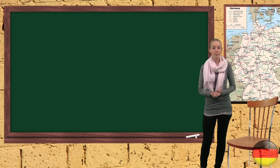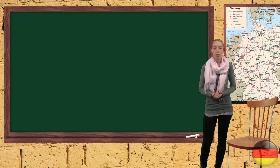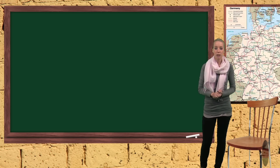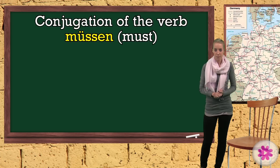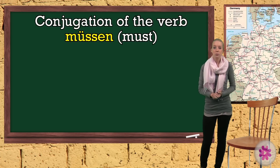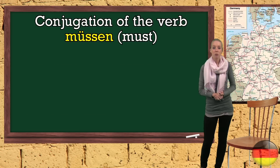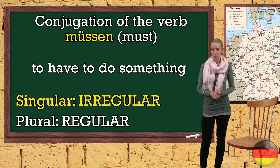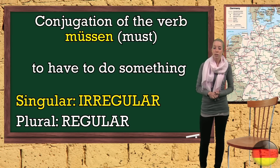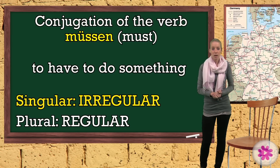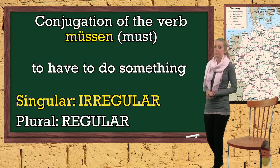Okay, here we go. There is a lot of work waiting for us today. We start with the conjugation of the verb müssen — 'must' — which also refers to the expression 'to have to do something.' Once again, the three singular forms are irregular, while the three plural forms are regular.